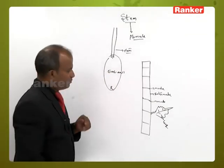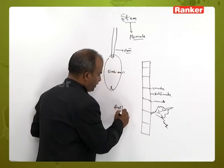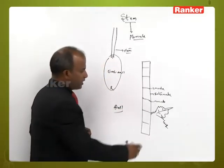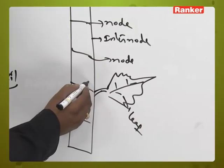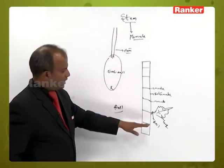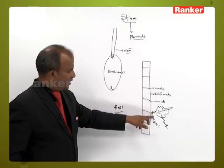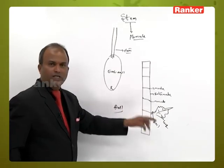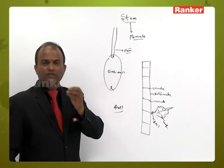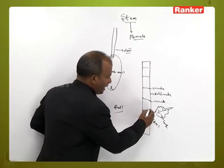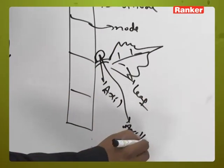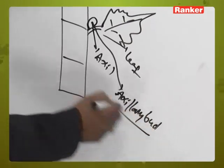The axil is the upper angle between the leaf and the node of the stem. From this axil, an axillary bud is developed.